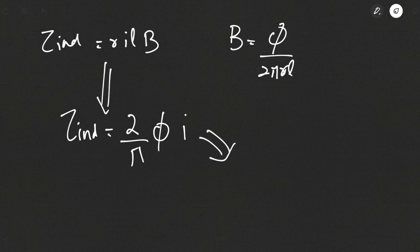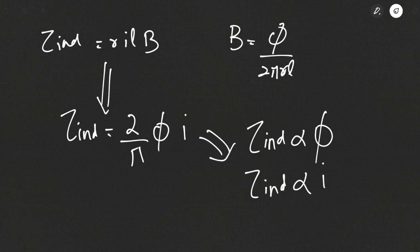From this equation, torque induced is proportional to φ and torque induced is proportional to I. So for a simple rotating loop acting as a DC motor, the net induced torque will be proportional to the magnitude of the magnetic field or flux, and it will also be proportional to the current flowing through the conductor. Just like induced voltage is proportional to flux and speed, induced torque is proportional to flux and current.